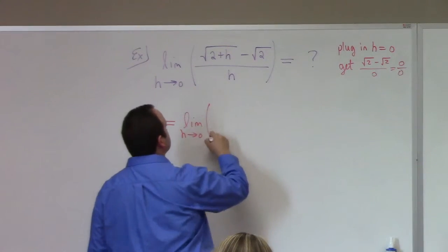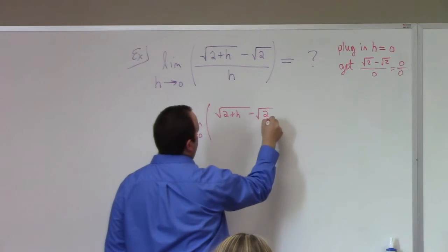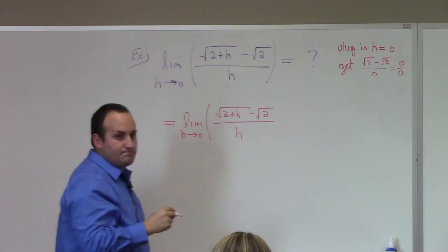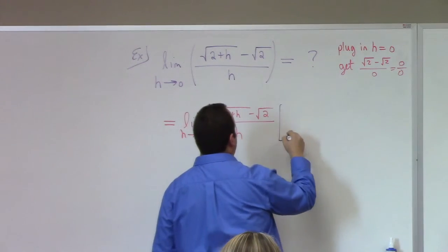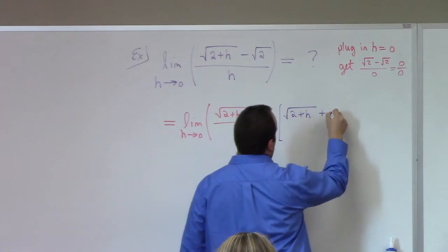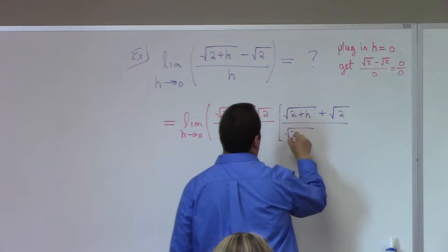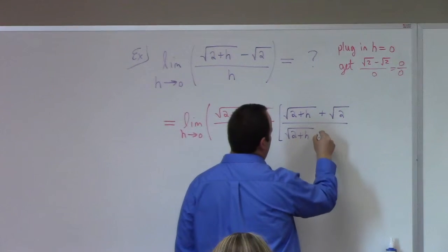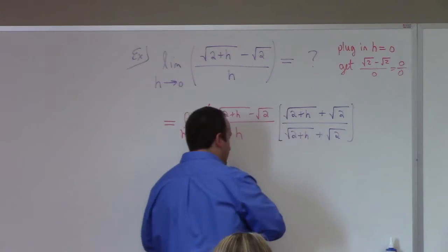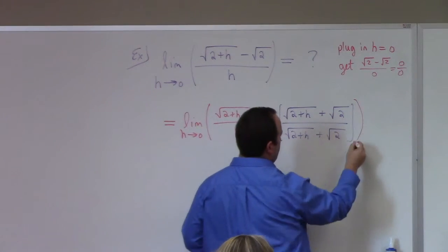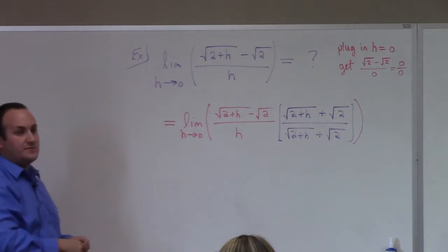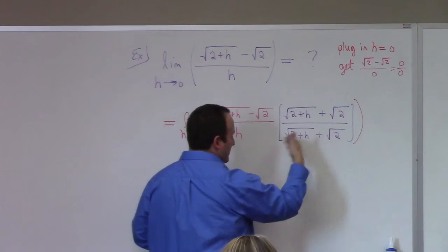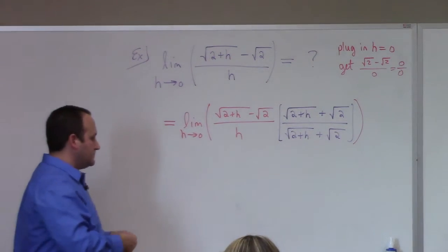So here's where that algebra that you were asked to review comes into play. You kind of rationalize the numerator. So what we're going to do is square root of 2 plus h minus square root of 2, that's fine I'm just writing it again. And then we multiply by 1. And that 1 would be square root of 2 plus square root of 2 over the square root of 2 plus square root of 2. This is fine even at 0, that's still 1. But somehow multiplying this by this purple 1 fixes it.